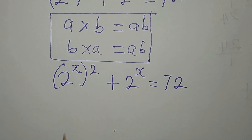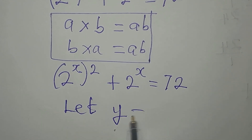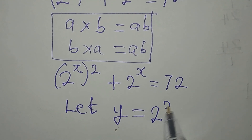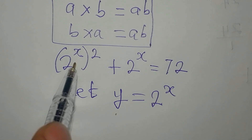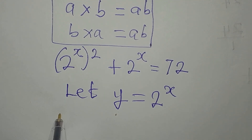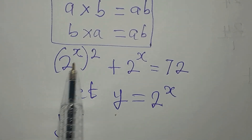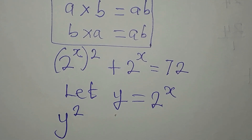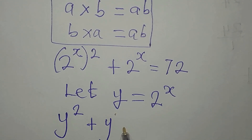Now we have 2 to the power of x appearing in two places, so let y be equal to 2 to the power of x. In place of the first term I will now have y to the power of 2, because 2 to the power of x is now y, then plus y — and it's equal to 72.